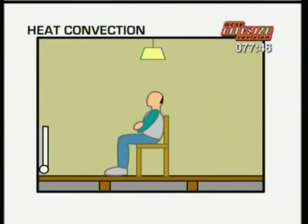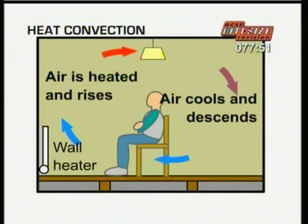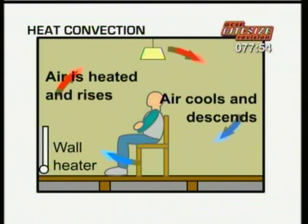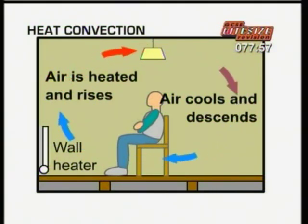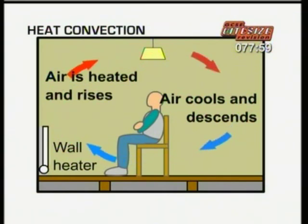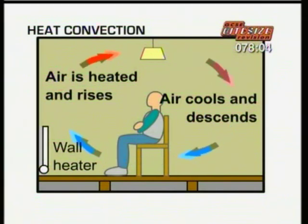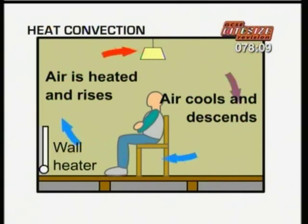Convection is another way that heat travels from one place to another. If you have a heater on one side of the room, the heat gradually spreads throughout the room. The air around the heater gets hot, it expands, becomes less dense and rises. Colder air sinks and moves in to take its place and is, in turn, heated.